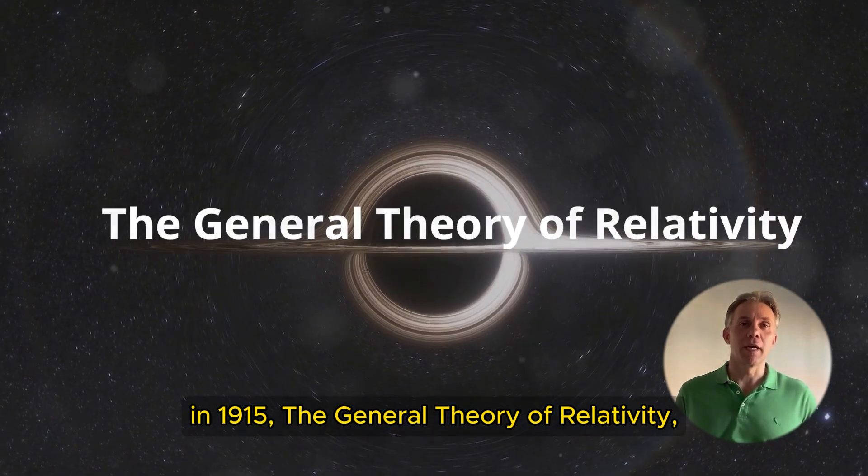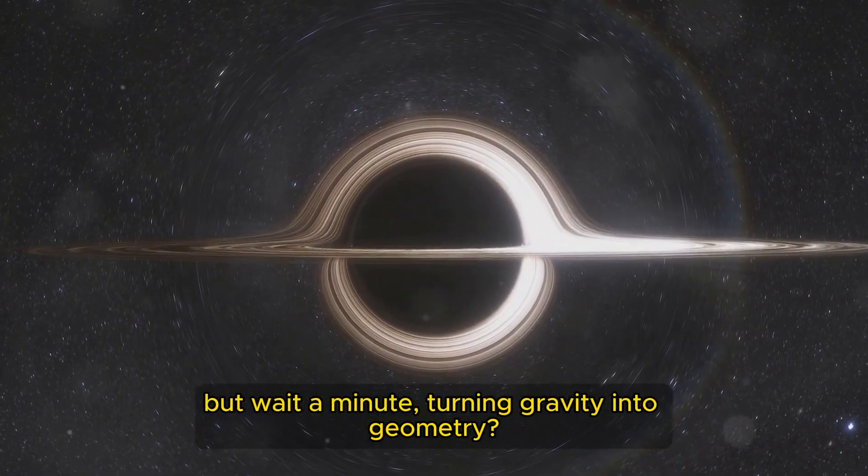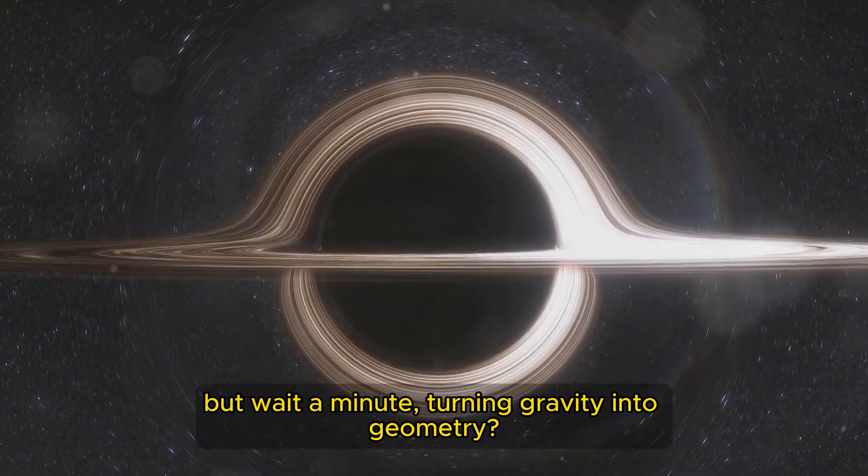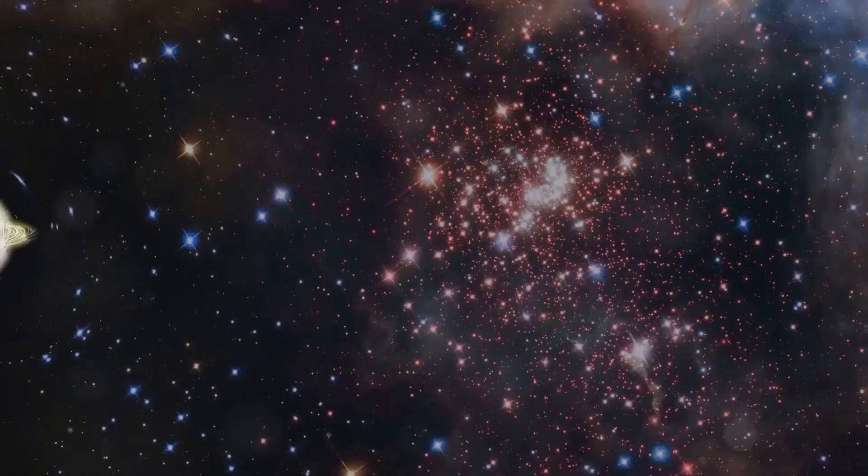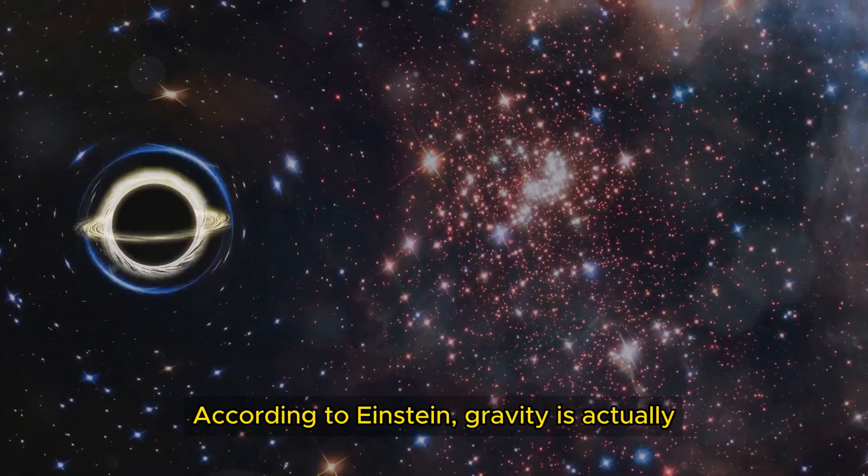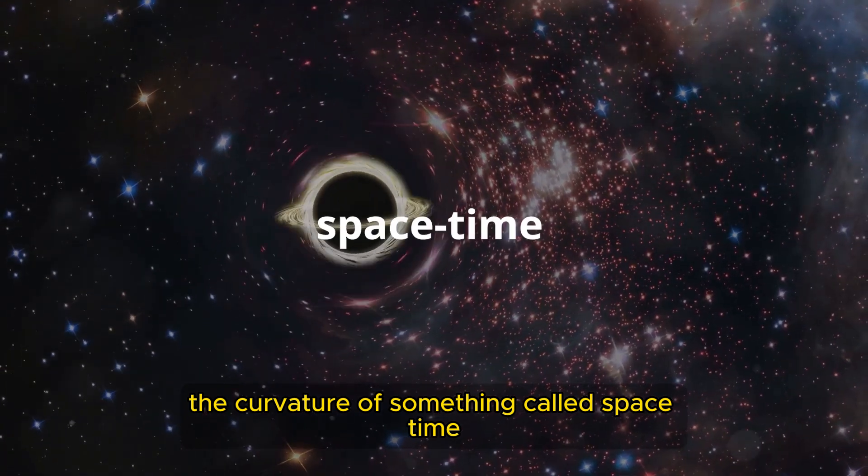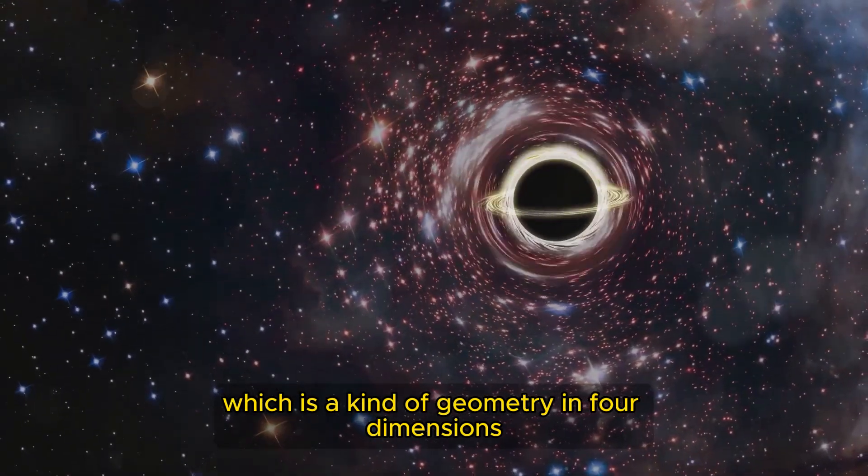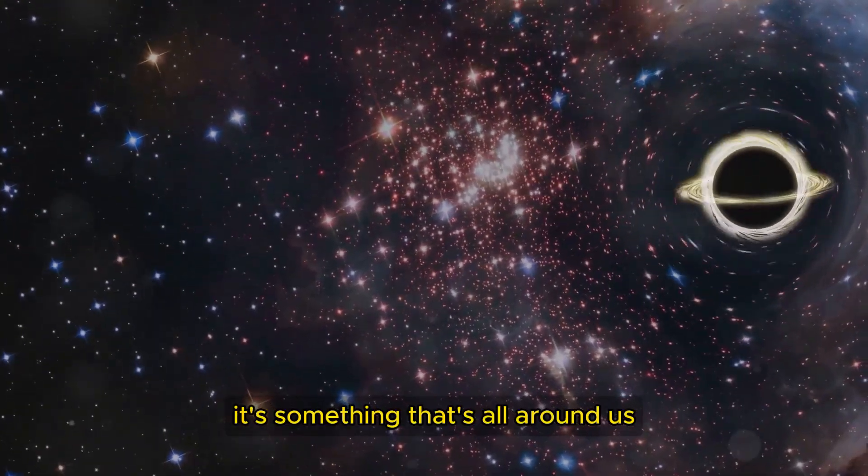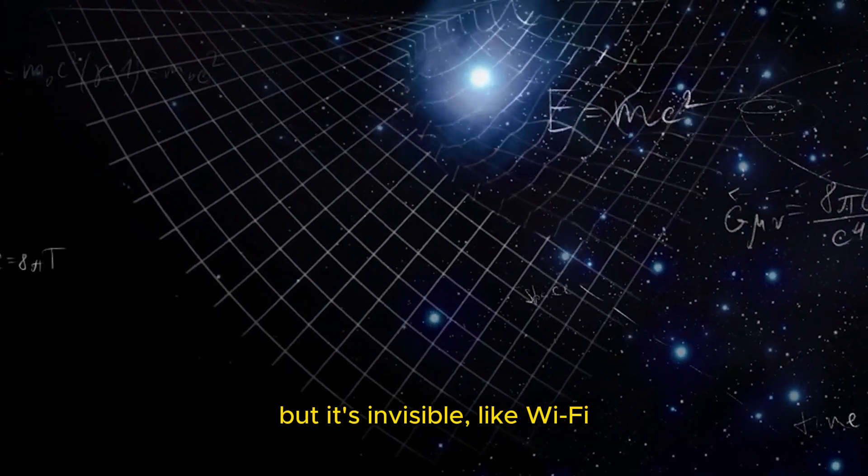The general theory of relativity. But wait a minute, turning gravity into geometry? Yes, that's right. According to Einstein, gravity is actually the curvature of something called spacetime, which is a kind of geometry in four dimensions. It's something that's all around us, but it's invisible, like wifi.